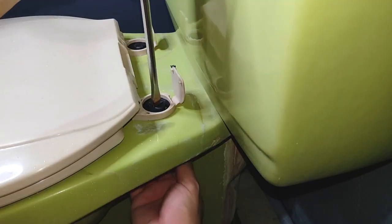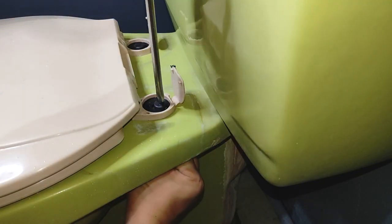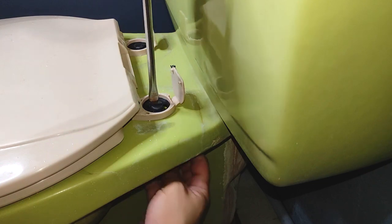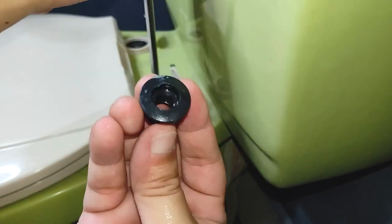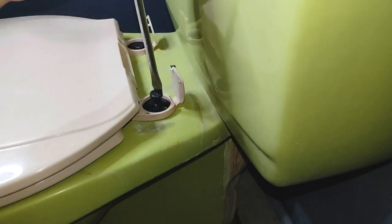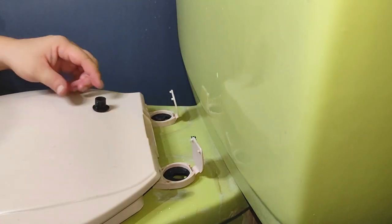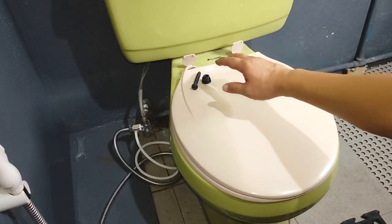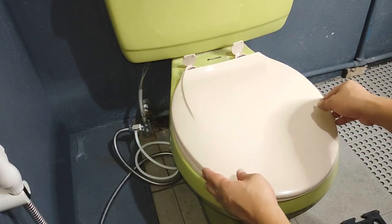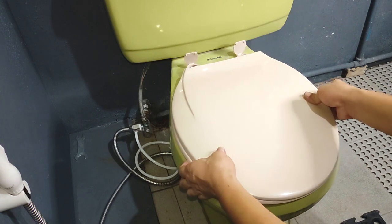So while holding the nut with your fingers or with a pair of pliers, loosen the bolt on top with a screwdriver. With both sides now unfastened, we simply lift the entire seat and cover out of the way.